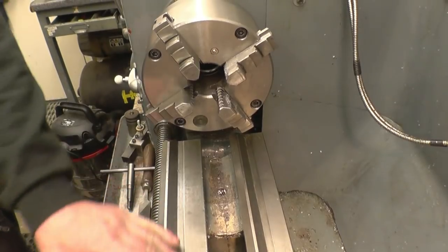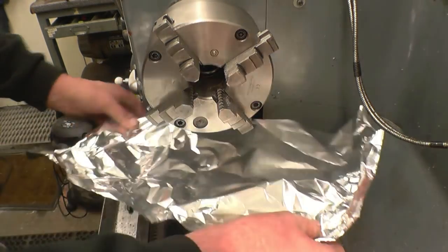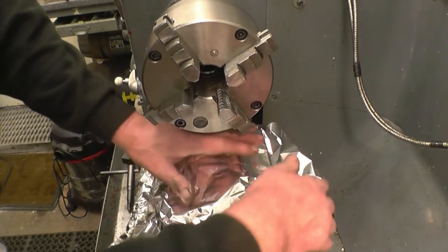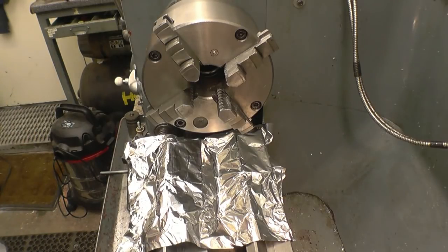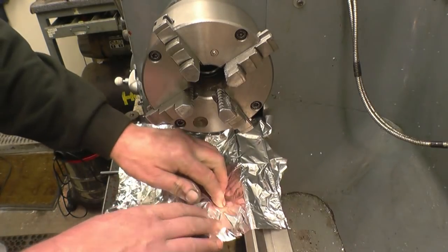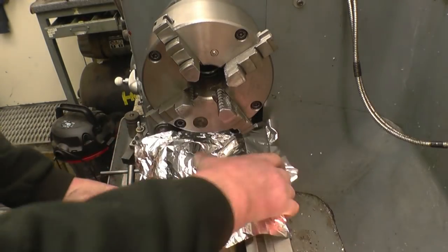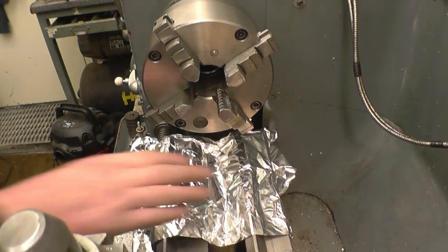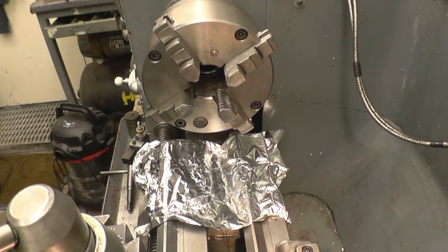You know most of this lathe is made out of cast iron, but cast iron dust is really bad for lathes. So I'm going to put a little bit of protection on the edges to stop it from getting under the lead screw.